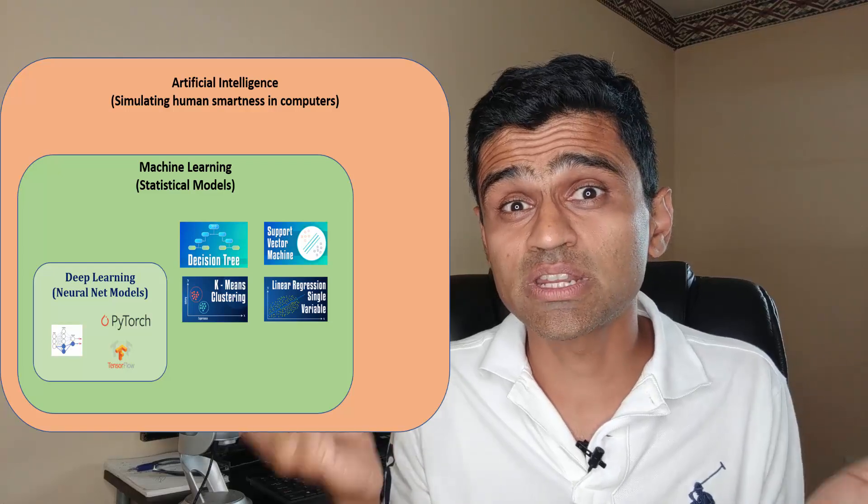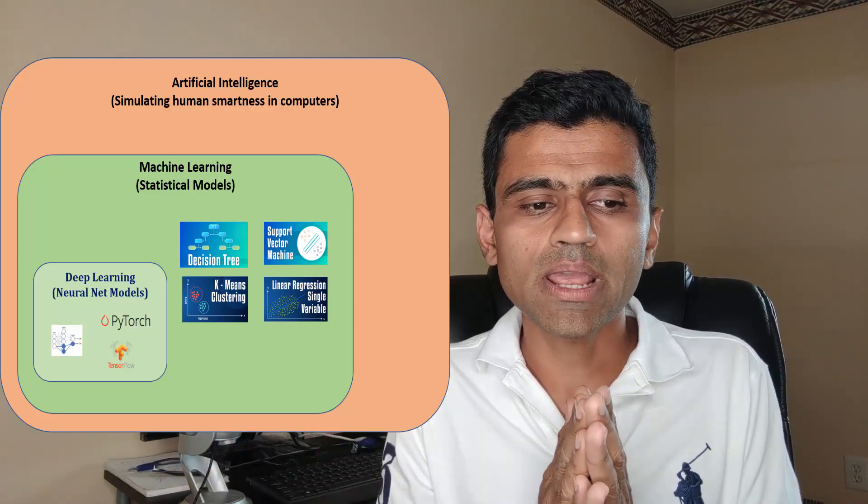The definition of artificial intelligence is you are trying to make a computer as smart as humans. Computers traditionally are good with certain types of tasks, but when it comes to computer vision, image recognition, or audio processing,